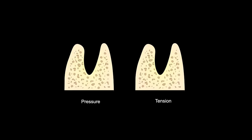Based on this theory, when we apply orthodontic forces, on one side we have compression in the direction of tooth movement, and on the other side we have tension away from the direction of tooth movement. Bone recognizes those compression stresses and in response goes through resorption, while on the other side bone recognizes the tension stresses and in response goes through formation.